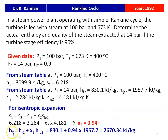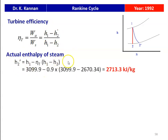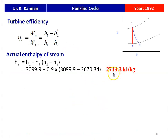The isentropic enthalpy at the turbine exit: H2 = HF2 + X2·HFG2 = 830.1 + 0.94·1957.7 = 2670.34 kJ/kg. Turbine efficiency = (H1 - H2_actual) / (H1 - H2), so the actual enthalpy H2_actual = H1 - η·(H1 - H2) = 3099.9 - 0.9·(3099.9 - 2670.34) = 2713.3 kJ/kg. Therefore, the actual quality of steam extracted is X2 = 0.94 and the actual enthalpy is 2713.3 kJ/kg.